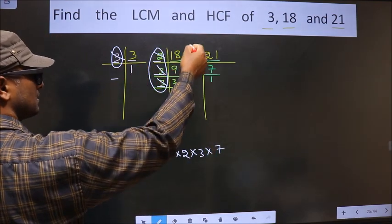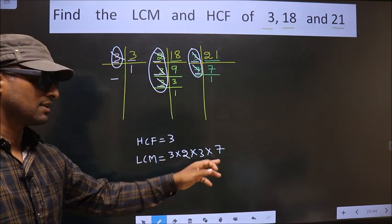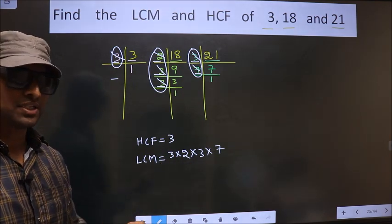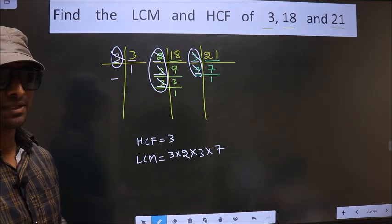Now each number has been cut. So now you multiply these numbers. Whatever number you get, that is your LCM. So let us multiply.